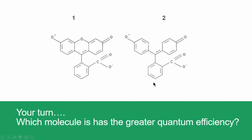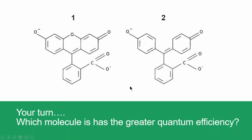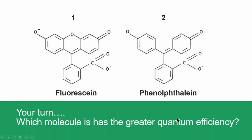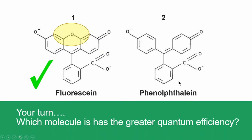Your turn again — which one has the greater quantum efficiency? I hope your eyes zeroed in on this area where the oxygen bridge locks this group of rings into place. The name's a giveaway: fluorescein versus phenolphthalein. Fluorescein is really the grandfather of fluorescent species — there are so many derivatizations of it used in so many assays. Phenolphthalein is a great chromophore, but because it deactivates with molecular motion, it's not a great fluorophore. So fluorescein it is.